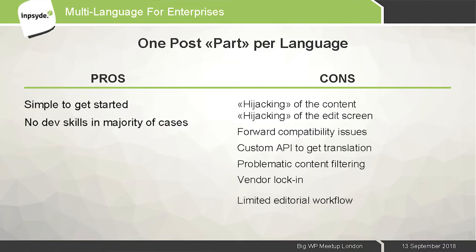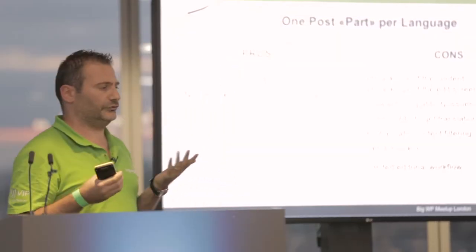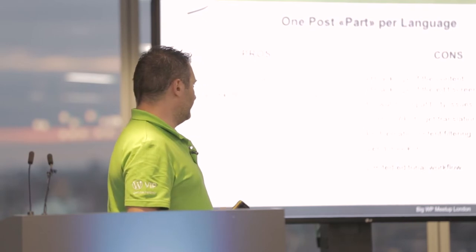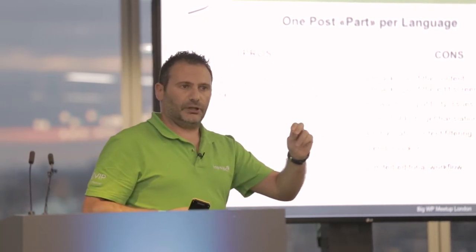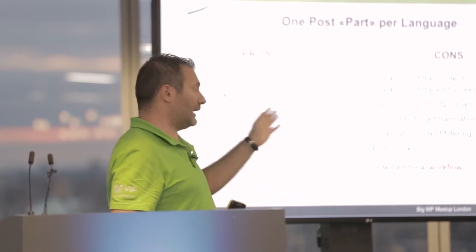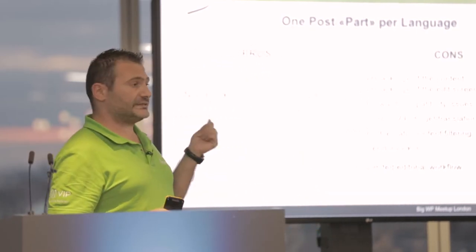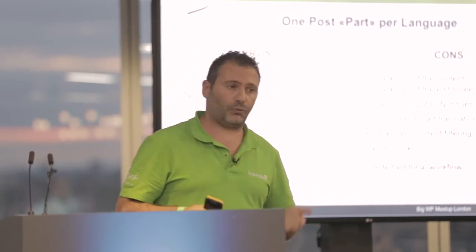For the pros of the first approach: the plugin can be quite simple to install and configure — you don't need special skills, you just install and it works. But we have quite a lot of problems with this approach, because we need to do things with the content that are not normal for the WordPress API. For example, we have to split the content using separators. Imagine trying to make this work with Gutenberg — that's not going to work. This makes forward compatibility of the plugin quite problematic.